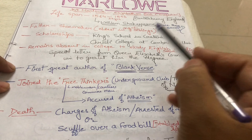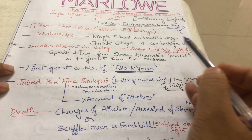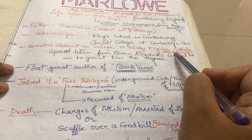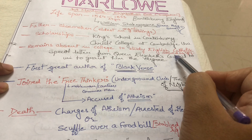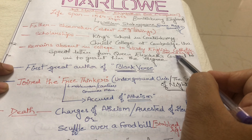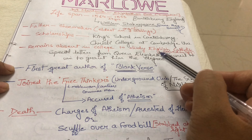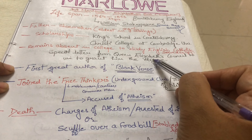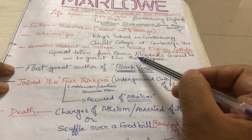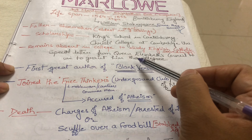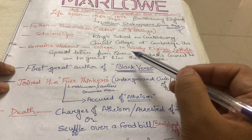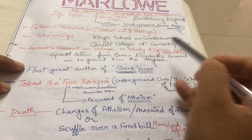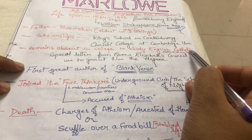When he was in college, he was absent many times and was studying Catholicism. Some people believed he was absent because he was a secret spy for the government. Why? Because in college, he had a special letter from Queen Elizabeth. So people say he may have been a secret government spy, which is why he could not attend university regularly, and Queen Elizabeth's council sent a letter to the university to grant him his degree.